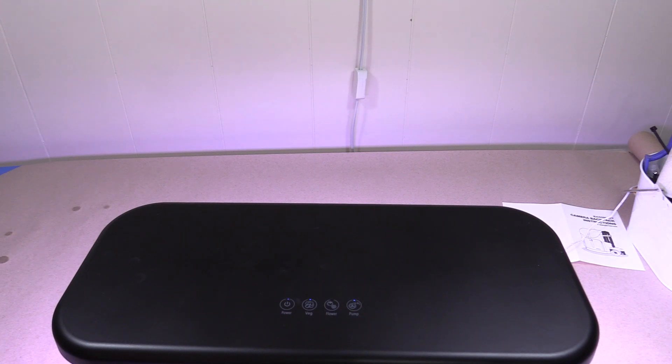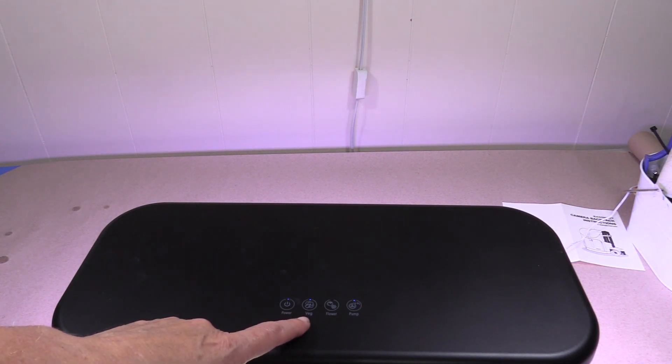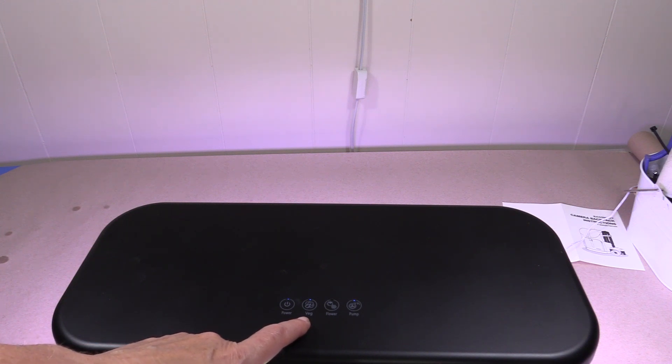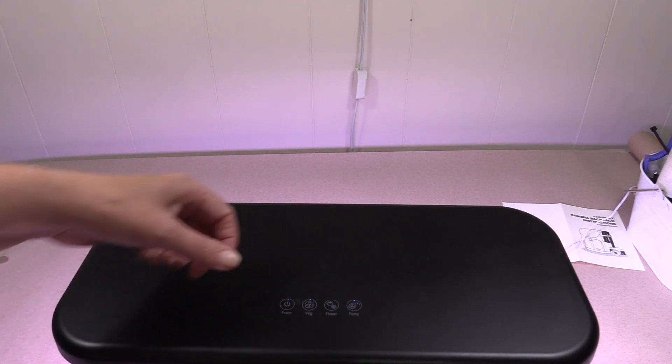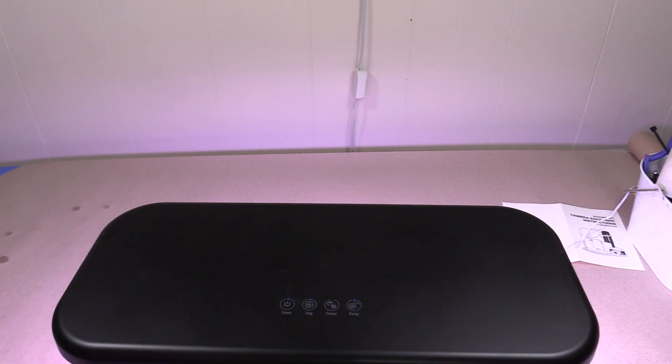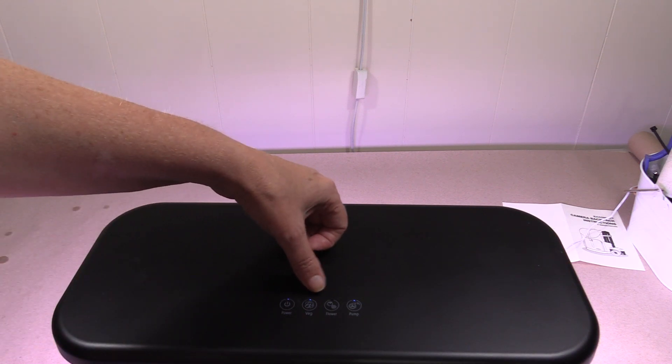Hopefully you guys saw that light just came on from around the unit. It automatically defaults to vegetables which is perfect since we're growing lettuce but you do have the option to switch it to flowers. Now the difference between vegetables and flowers as far as the unit is how long the light and the pump are going to stay on and off. These automatically cycle so you have nothing to worry about just select what you're growing.